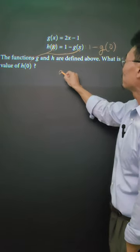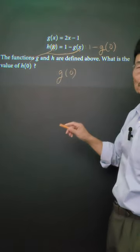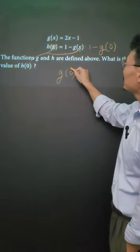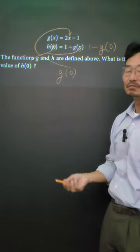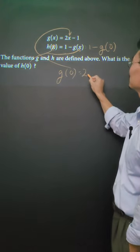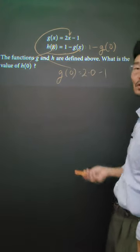Next, how do we find g of 0? We're going to do the same thing. Only thing is we're going to take that 0, plug it in to the x of the g function. So this will turn into 2 times 0 minus 1.